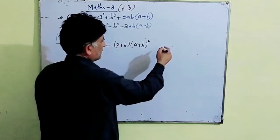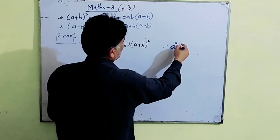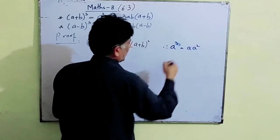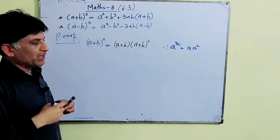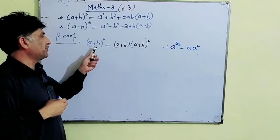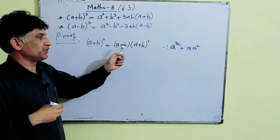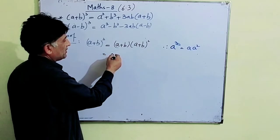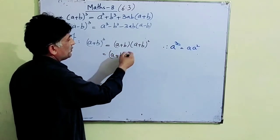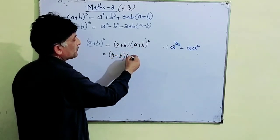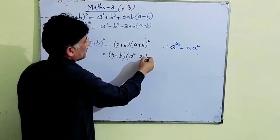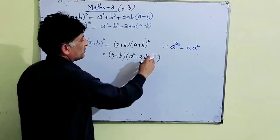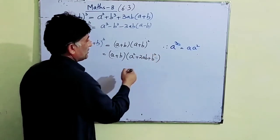Because if we take the hint, a³ = a × a². So similarly (a + b)³ = (a + b)(a + b)². Next step: (a + b) × (a² + 2ab + b²), because we have the formula for (a + b)².